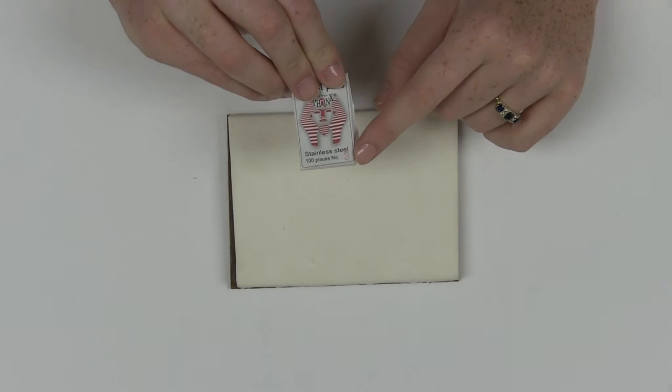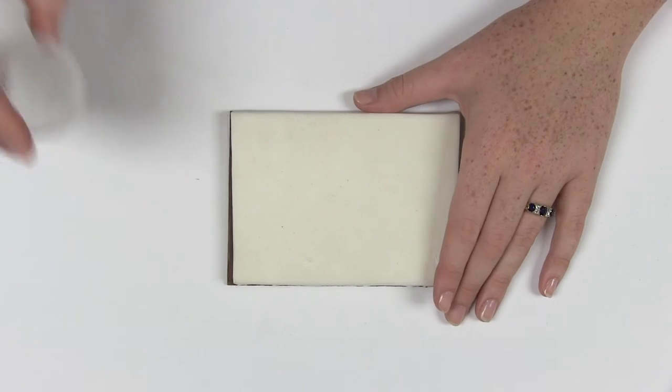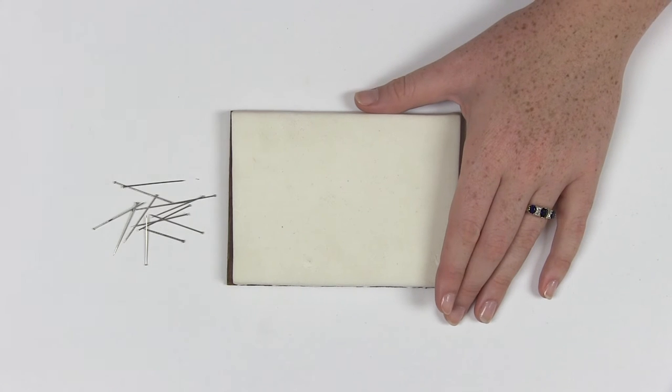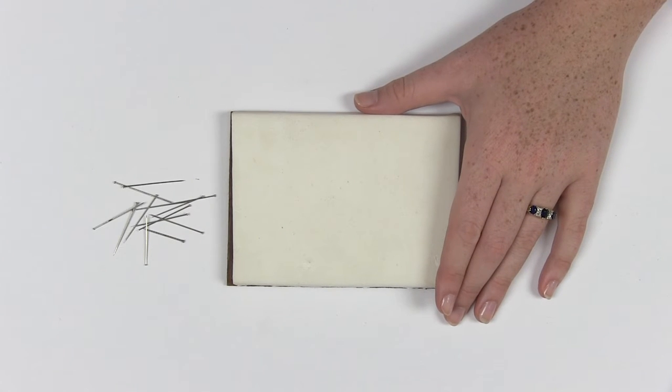To pin a beetle, you will need a foam board, number three insect pins or larger depending on the size of the insect, and some non-insect straight pins to position the body parts for drying.